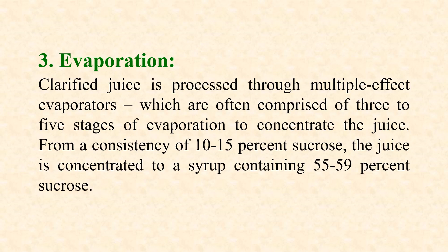After clarification, sugarcane juice is evaporated to increase its concentration. For evaporation, multiple effect evaporators are used, which are often comprised of 3 to 5 stages of evaporation. During evaporation, the sugarcane juice of 10 to 15% sucrose strength is concentrated to a syrup containing 55 to 59% sucrose.